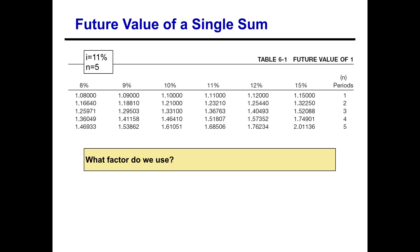Looking at the tables — you can see this snippet of your larger tables — I'm using the future value of a dollar, also called future value of a single sum or lump sum. We're looking at an interest rate of 11%, compounded annually over five years. That's compounded once a year, so one times five years gives us five periods.